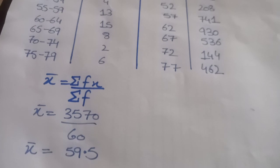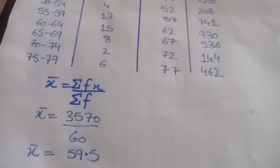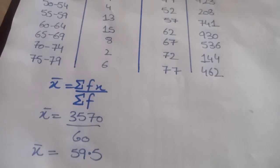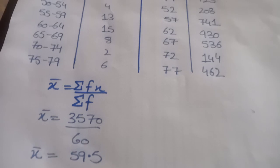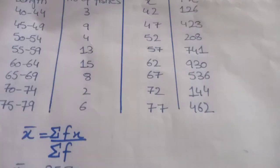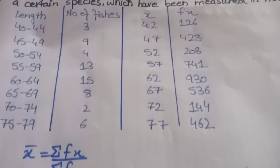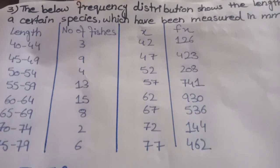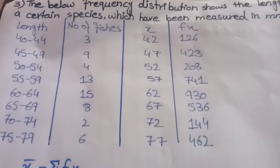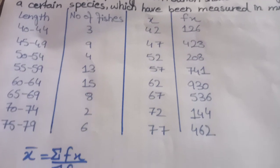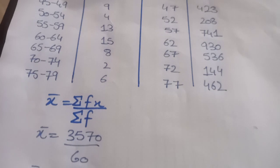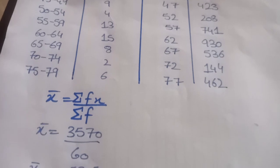So this is how we can calculate arithmetic mean of grouped data. In questions one, two, and three, we studied how to calculate arithmetic mean for grouped data and ungrouped data. First we need to identify the formula, then completing the table will become very easy for you.